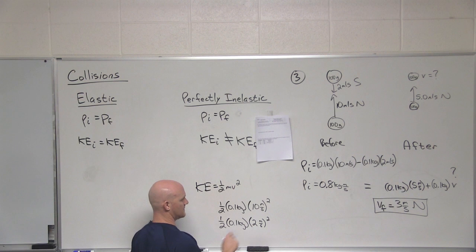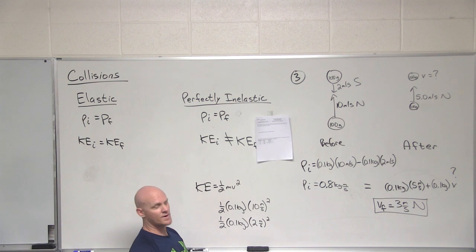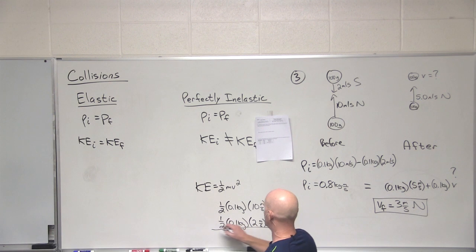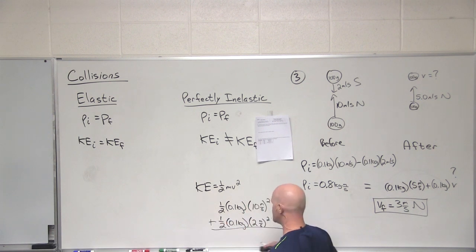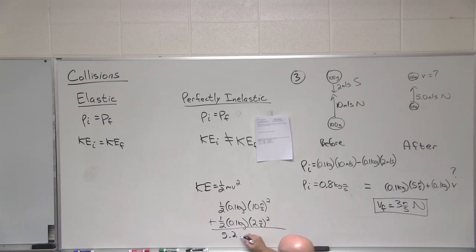Now, is that plus 2 or minus 2? So it turns out I don't really care because kinetic energy, well, it's squared anyways, but kinetic energy is a scalar, not a vector. It does not have direction associated with it whatsoever. All right. And so if we add these together, what do we get for a kinetic energy before the collision? 5.2. 5.2 what? Awesome.